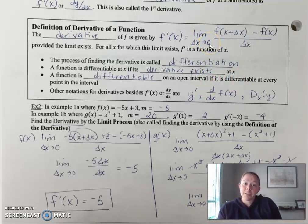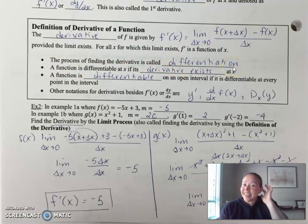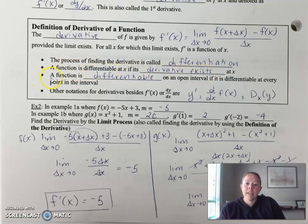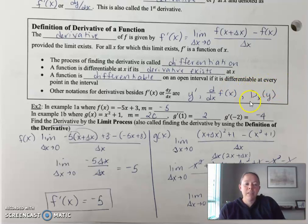If the limit doesn't exist — if there's an asymptote or an open hole — there's no derivative, no slope of the tangent line. The process of finding the derivative is called differentiation. A function is differentiable at x if its derivative exists at x, and differentiable on an open interval if it's differentiable at every point in the interval. Other notations for derivatives besides f′(x) or dy/dx include y′, d/dx[f(x)]. You're finding the derivative of y in terms of x.